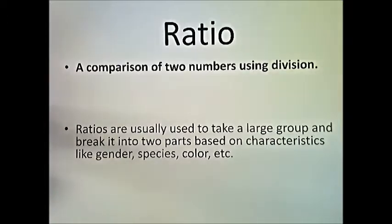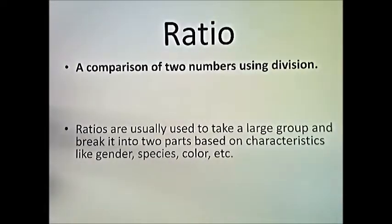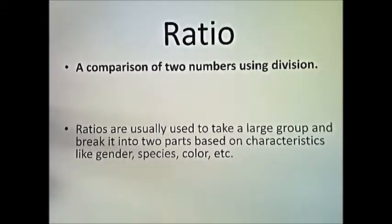For example, look around your class — you may notice a number of male students and count those versus the number of female students. In the class you may have 10 male students and 8 female students, so that's a ratio of 10 to 8. You'd want to simplify that down — 2 goes into both 10 and 8 — so that ratio reduces down to 5 to 4.